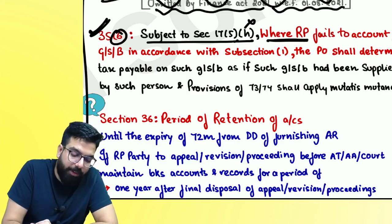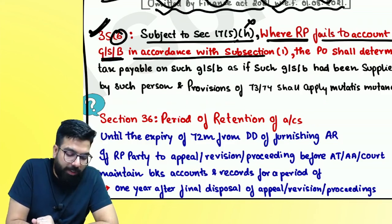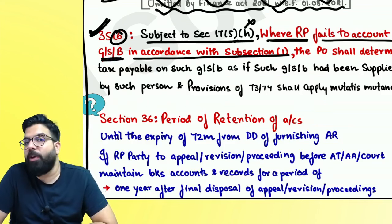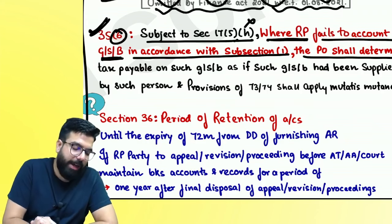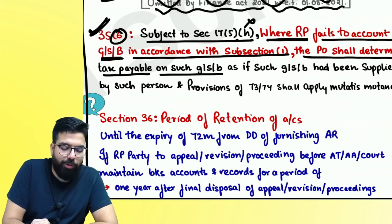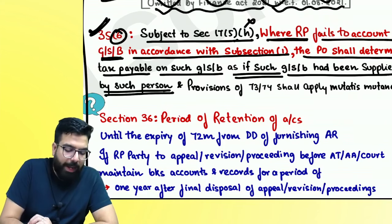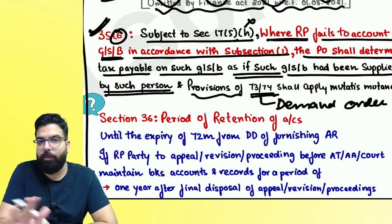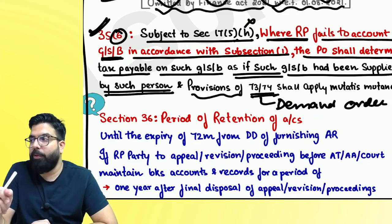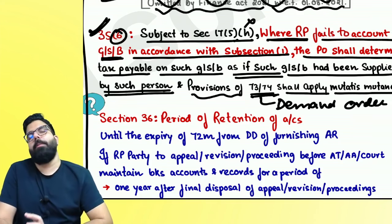Section 35.6: Where a registered person fails to account for goods or services in accordance with subsection 1 — meaning if you don't maintain your PCOS accounts — the proper officer shall determine the tax payable on such goods as if such goods have been supplied by that person. The provisions of sections 73 and 74 (demand order) shall apply.